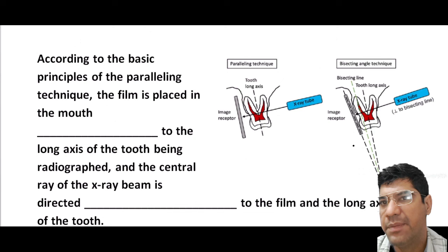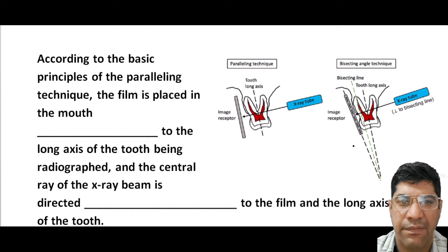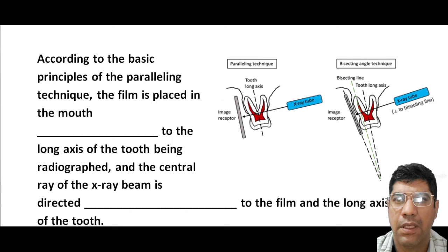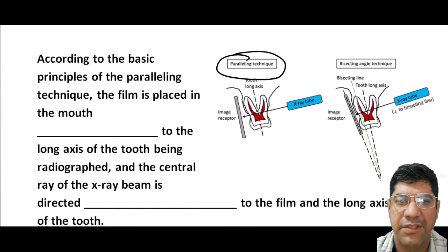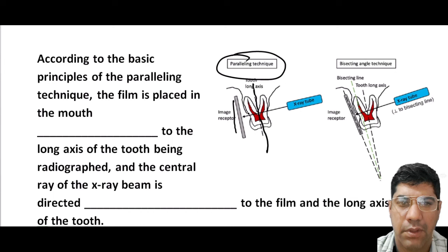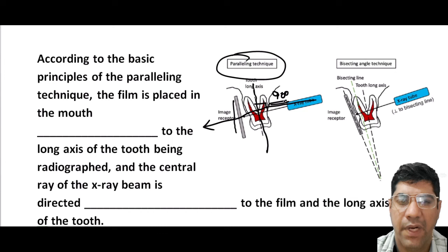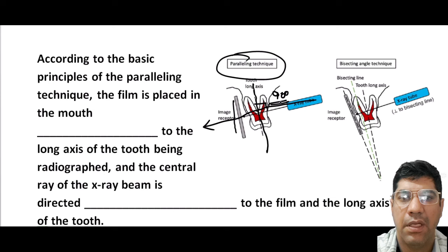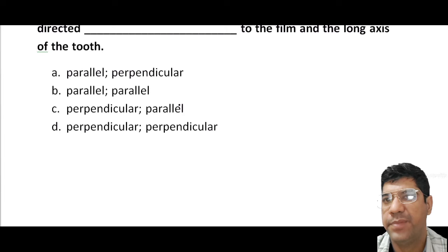According to the basic principle of the paralleling technique, the film is placed parallel to the long axis of the tooth. The central ray of the x-ray is directed perpendicular to both the film and the long axis of the teeth. So the answer is parallel and perpendicular — that is the paralleling technique.